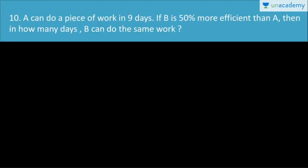This is the first question in this lesson — efficiency of a different variety. A can do a piece of work in 9 days. If B is 50% more efficient than A, then in how many days can B do the same work?